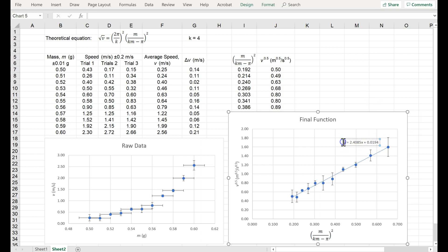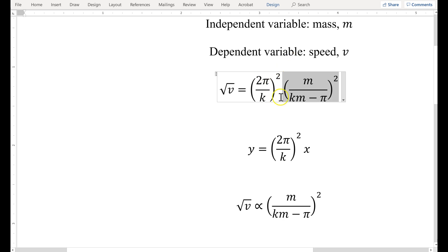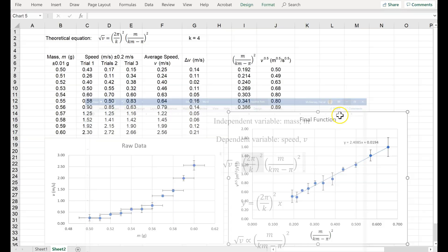So, if I replace y with radical v, I could replace x with this whole thing, m over km minus pi all squared, and this is my equation, right? That's the function I've just developed. So, notice that it didn't go through the origin like I expected, hopefully, 2.4, hopefully that's equal to this, because that's what we expected the slope to be, but who knows.